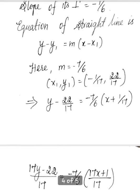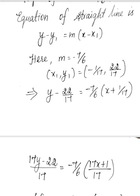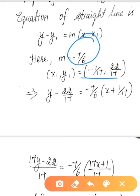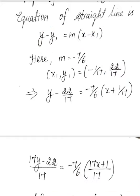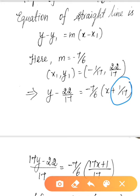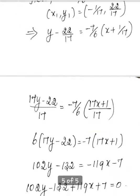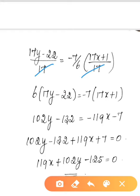Using the point-slope formula y minus y1 equals m into x minus x1, with the point x1 equals minus 1 by 17 and y1 equals 22 by 17, and the perpendicular slope m equals minus 7 by 6. Substituting: y minus 22 by 17 equals minus 7 by 6 into x minus minus 1 by 17. Multiplying through by 17 and then by 6: 6 into 17y minus 22 equals minus 7 into 17x plus 1, giving 102y minus 132 equals minus 119x minus 7.